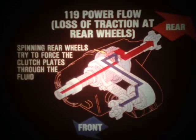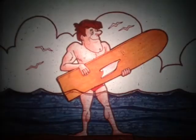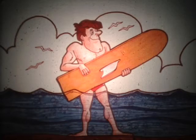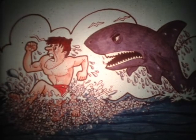Here's how the viscous coupling provides drive torque to an axle with available traction, even though the other axle is spinning. The spinning rear wheels try to force the drum's clutch plates through the thick silicone fluid. This causes the coupling's rotational speed to increase, and the plates are forced to shear through the fluid at even higher speeds. As the plates cut through the fluid, the fluid expands, creating friction between the plates and the fluid. If you've ever walked through waist-high water, you can understand the principle: walking slowly creates low resistance, but running creates much more. Similarly, in the viscous coupling, the more an axle spins, the more resistance is encountered.